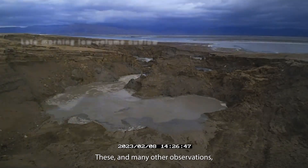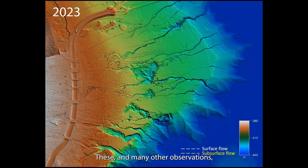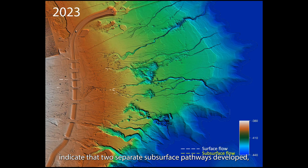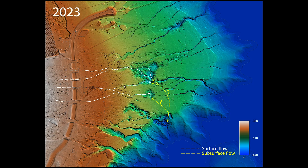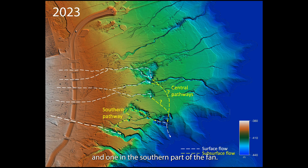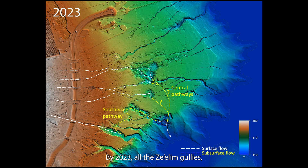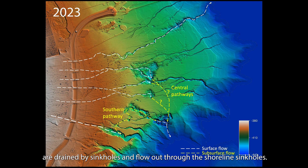These and many other observations indicate that two separate subsurface pathways developed — one in the central and one in the southern part of the fan. By 2023, all the Tsarelim gullies, except for the northernmost one, are drained by sinkholes and flow out through the shoreline sinkholes.